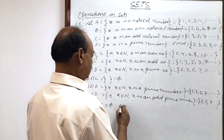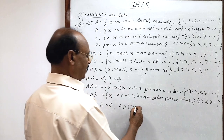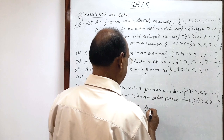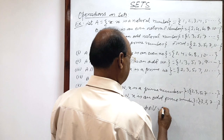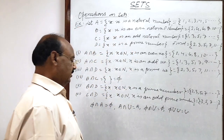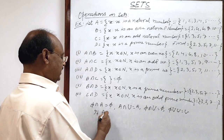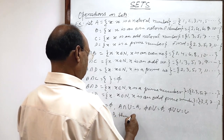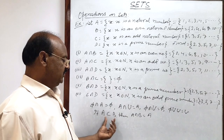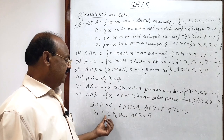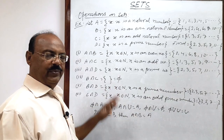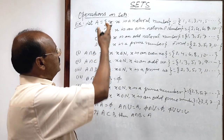Similarly, A∩U (where U is the universal set) gives the common elements in both, which is set A itself. Also, φ∩U = φ and φ∪U = U. These are very basic concepts. One more important concept: if any set A is a subset of another set B, then A∩B = A. Since A is a subset of B, all elements of A are available in set B, so the common elements are set A itself.